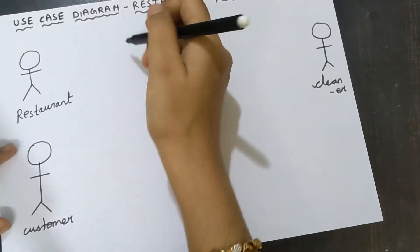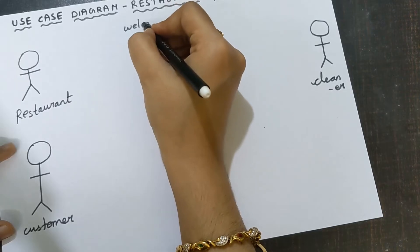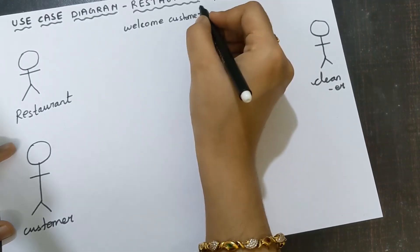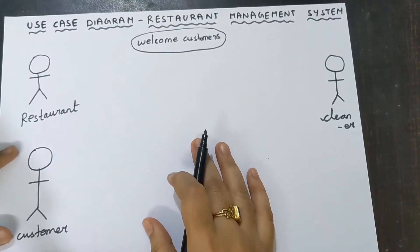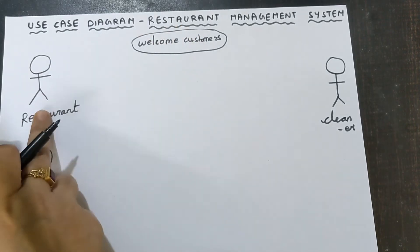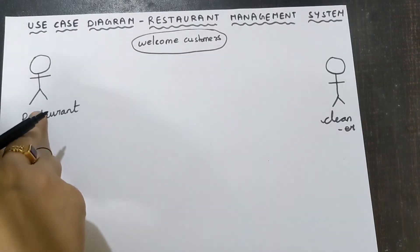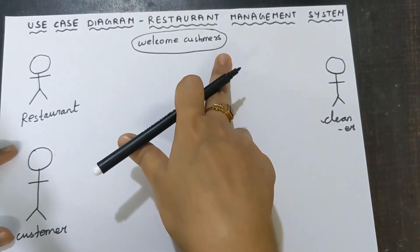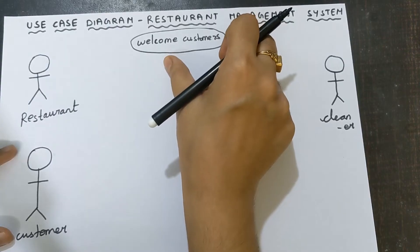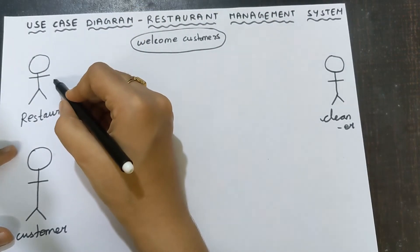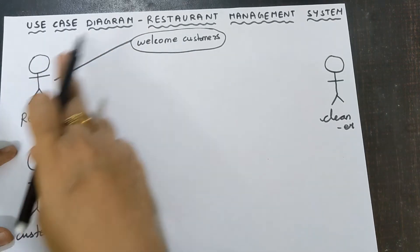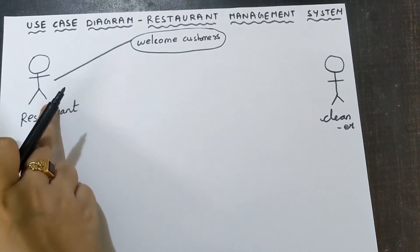If you take restaurant, the first main thing is welcoming the customers. The use case should be written inside an oval shape, and it should be related to the actor. So restaurant — in restaurant, you have to welcome the customer. You join this actor and this use case using a connector, which is a line drawn from the actor touching the use case. This is known as a connector line.